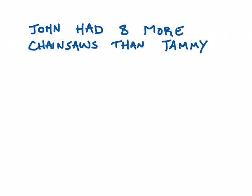So here we've got: John had eight more chainsaws than Tammy. One thing that's still going to be important is the idea of keywords, because they can help us figure out what's going on. But one of the things I hope you've noticed is that if you pay too much attention to keywords, they can sometimes be a little bit misleading. The same keyword in the question might mean something entirely different than a keyword in one of the sentences. So a box diagram can help us make sense of things that might normally trip us up.